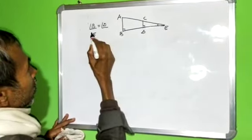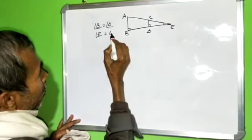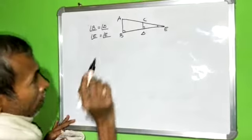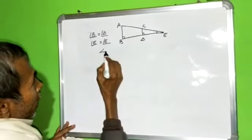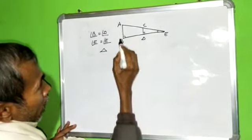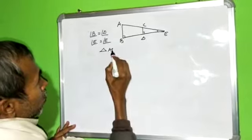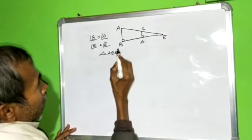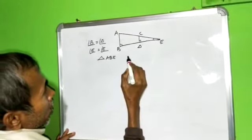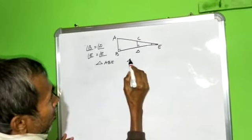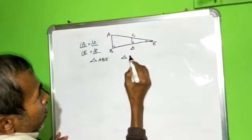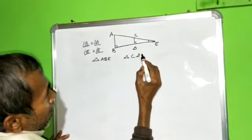Angle E equal to angle E. Therefore triangle ABE and triangle CDE, CDE.